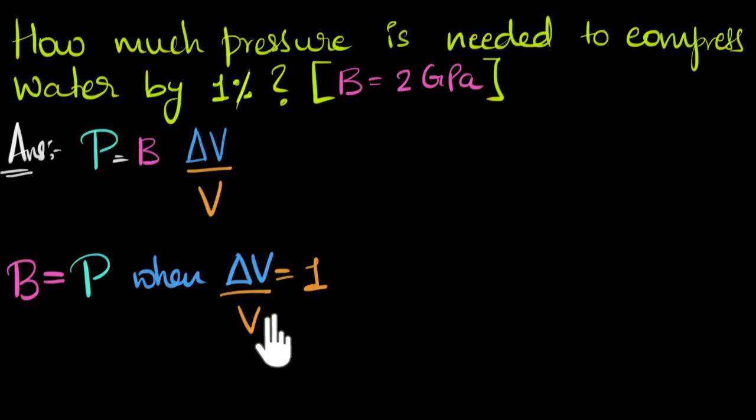So when delta V over V equals one, we're saying the change in the volume should equal the volume. Meaning, if the initial volume was five, we compress it by five. If the initial volume was 10, we compress it by 10. So we are compressing it to nothing. In other words, we're talking about 100% compression.